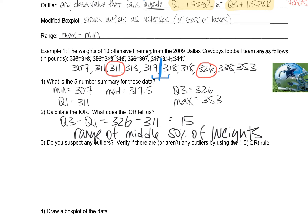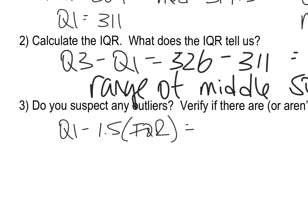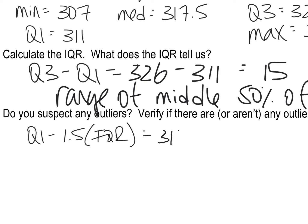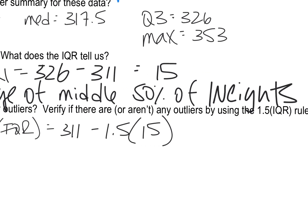So the first part of the outlier formula is Q1 minus one and a half IQR. So I'm going to plug in those numbers. Remember my Q1 was 311 minus 1.5 and my IQR was 15. And so that gives me 311 minus 22.5. That's what one and a half times 15 is, which equals 288.5.